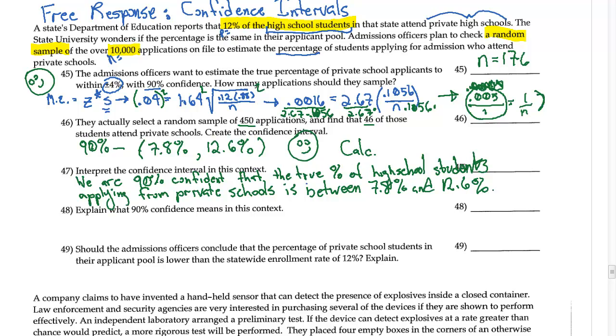So you state the confidence. You state the population. You state the parameter. And then you state the interval. It's pretty formulaic. You don't have to be real creative here. And so that makes us happy.